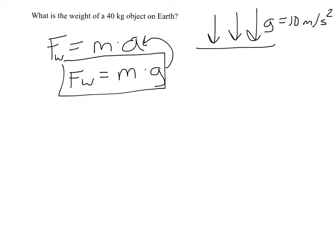If you want to calculate the weight of an object, as in this problem, the weight force equals the mass, 40 kilograms, times G. I'm going to use 10 for Earth, even though that's not technically right. So that means the weight of a 40 kilogram object is 400 newtons.